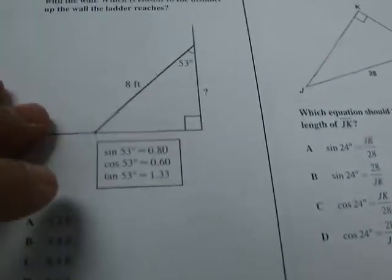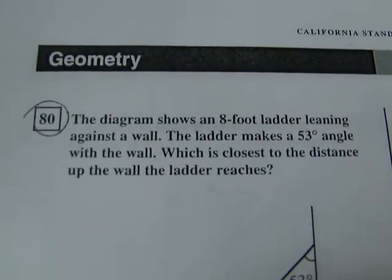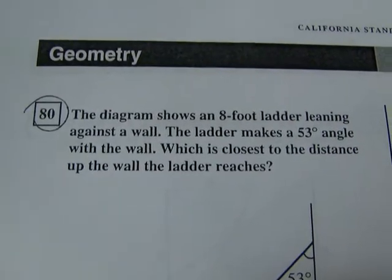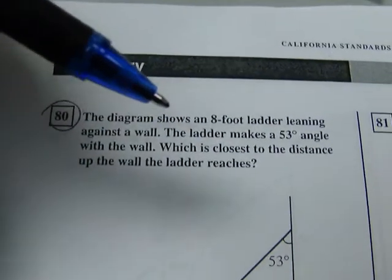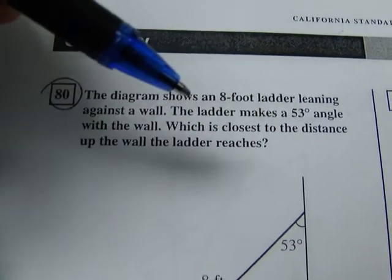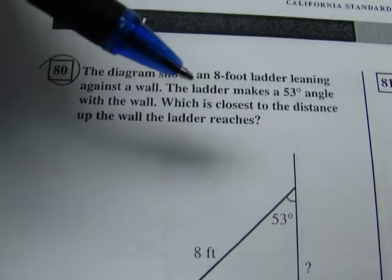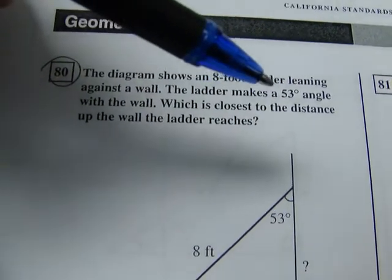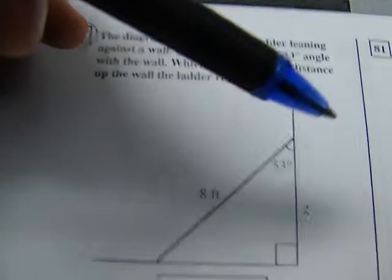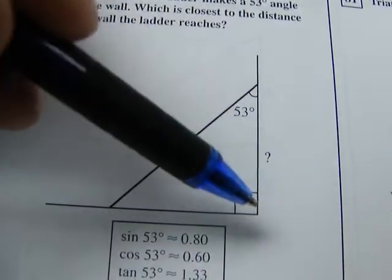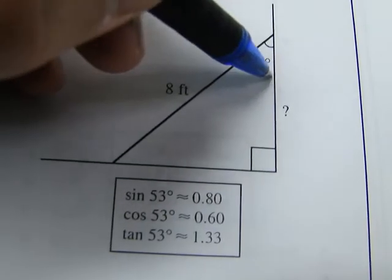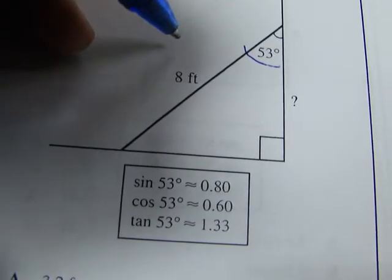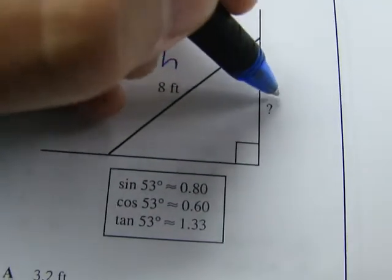Next problem is number 80. The diagram shows an 8 foot ladder leaning against the wall. Here's our 8 foot ladder leaning against the wall. The ladder makes a 53 degree angle with the wall. What is the distance up the wall that the ladder reaches? Well if this is our angle of record then we're talking about a hypotenuse here and we're talking about an adjacent here.